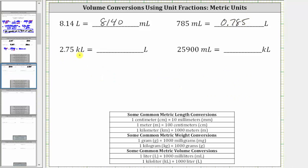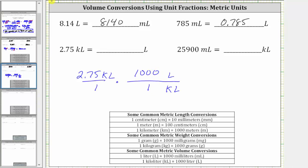Next we want to convert 2.75 kiloliters to liters. We write 2.75 kiloliters as a fraction with the denominator of one. Looking at the conversions, one kiloliter is equal to 1,000 liters. We use this conversion to form a unit fraction. Because we want kiloliters to simplify out, and we have kiloliters in the numerator, we have to have kiloliters in the denominator of the unit fraction and liters in the numerator. Using the conversion, one kiloliter equals 1,000 liters, the unit fraction is 1,000 liters over one kiloliter. The units of kiloliters simplify out, because we have kiloliters divided by kiloliters. Now we multiply — we have 2.75 times 1,000, which is 2,750, and the units are now liters. 2.75 kiloliters equals 2,750 liters.